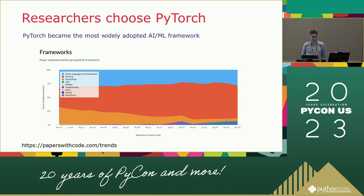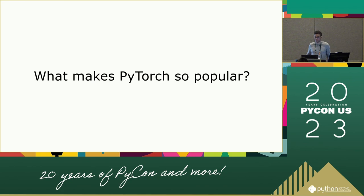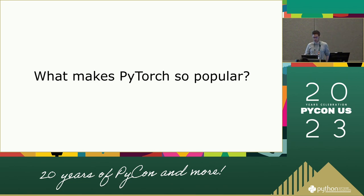PyTorch has become fairly popular. It's probably the most widely used machine learning framework for AI research. This graph from Papers with Code shows the number of new papers released with code and by framework used, and that big orange segment in the middle is PyTorch. I think it's worth considering what made PyTorch popular. This is especially important for PyTorch developers and maintainers because as we change and improve the framework, we want to make sure we adhere to the principles that helped it succeed in the first place.